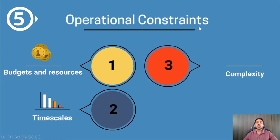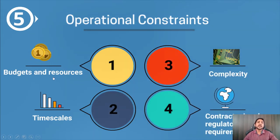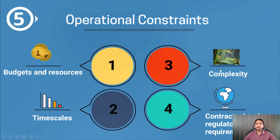The fifth factor is operational constraints. When working in an organization, there are certain constraints: budget and resources — if you don't have enough budget, you cannot repeat the testing cycle; timescale — if the duration is less, you cannot perform multiple testing cycles; complexity — if the product or technology is new, you may not know what type of testing to perform; and contractual and regulatory requirements — based on the contract you signed, you have to change your test process.